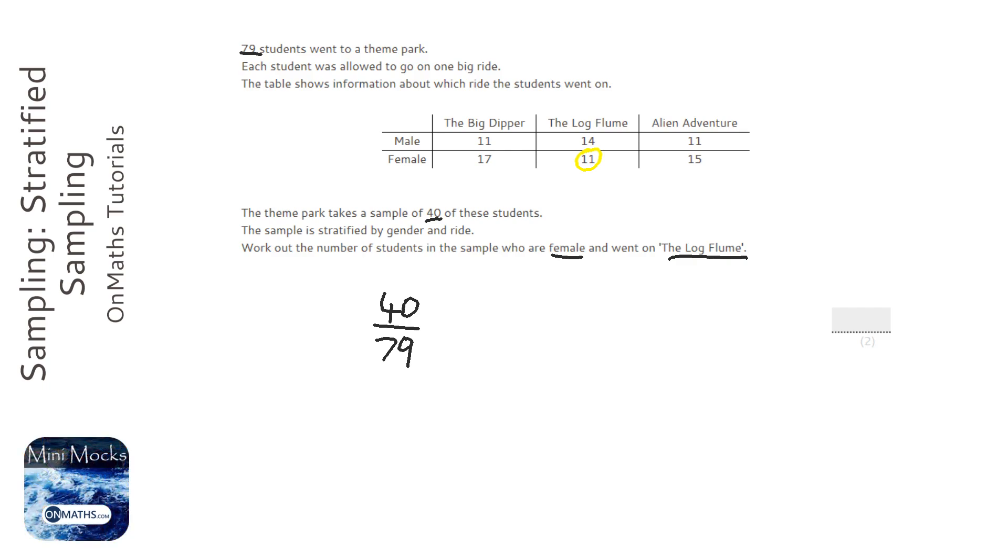That's the fraction that we want of each of the six groups of people: the males who went on the big dipper, the males who went on the log flume, and the females who went on those rides. So the first thing to do on stratified sampling is find out the fraction of the amounts of people that you need, and we want that fraction of 11.